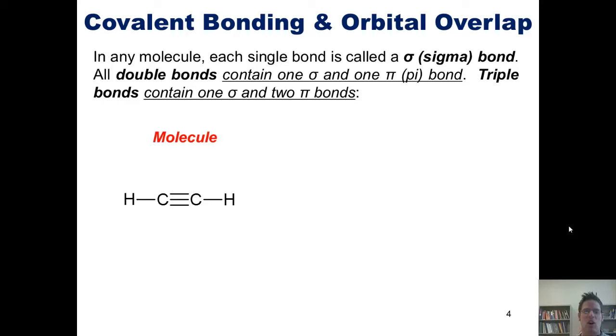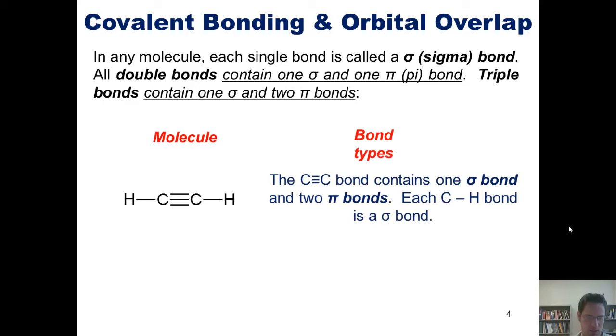The point is, the carbon-carbon triple bond in this molecule, as well as all triple bonds, contain one sigma bond and two pi bonds. Each carbon-hydrogen bond in the molecule is a single bond, and is therefore a sigma bond. The final point I wish to make here is this.